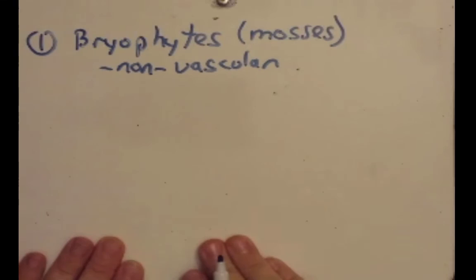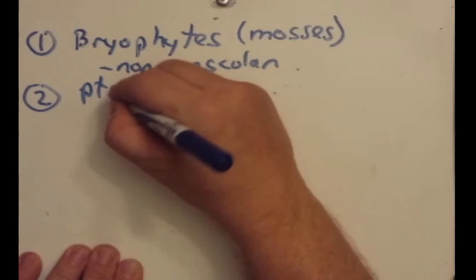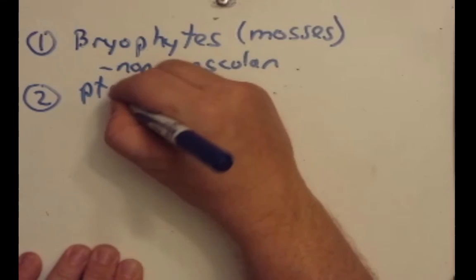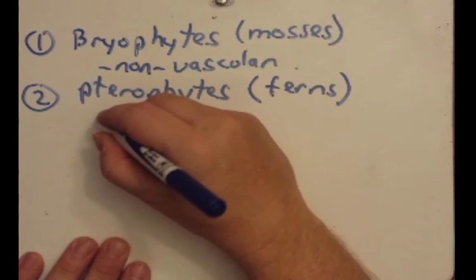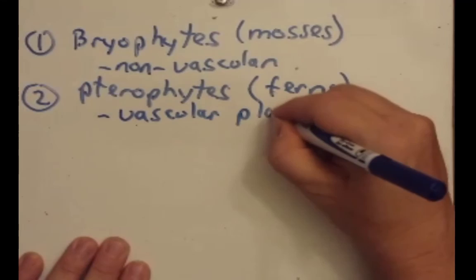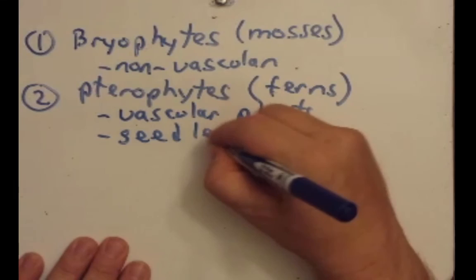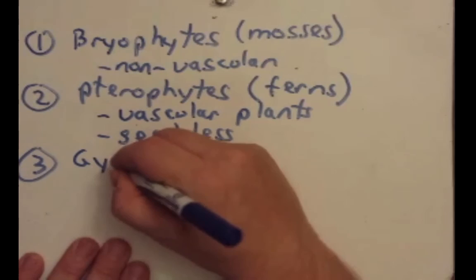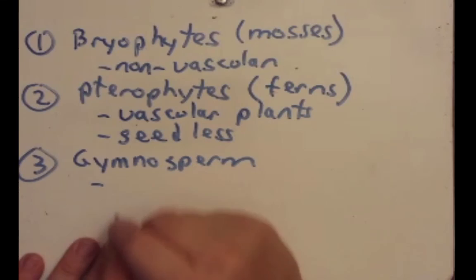Our second group would be our pterophytes. Examples of these would be like our ferns. They are also our first vascular plant, but they are seedless. Our third group represents our gymnosperms. These are also vascular plants and they have seeds. That's what distinguishes them.